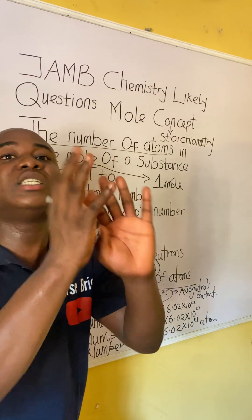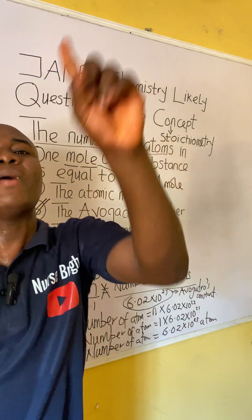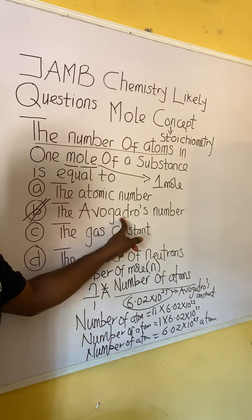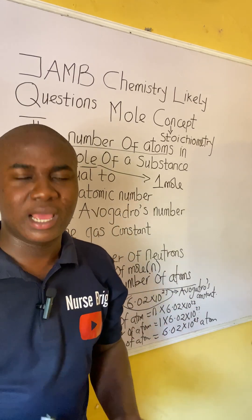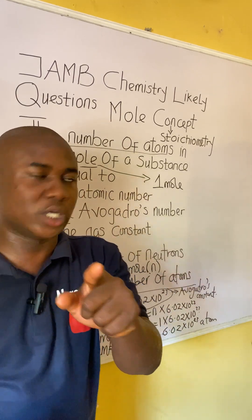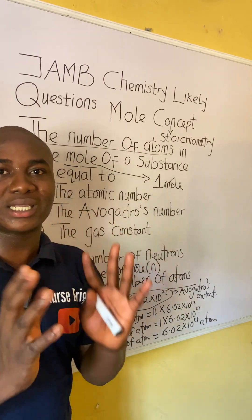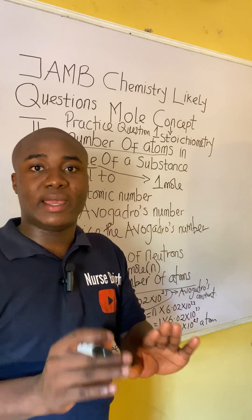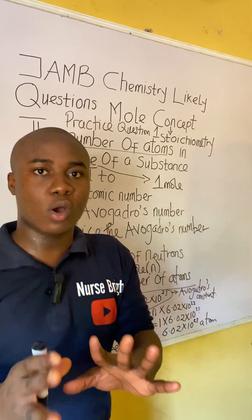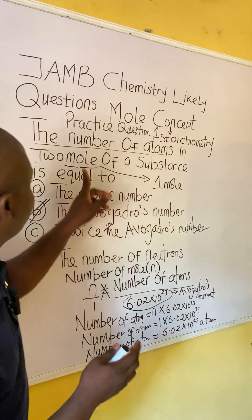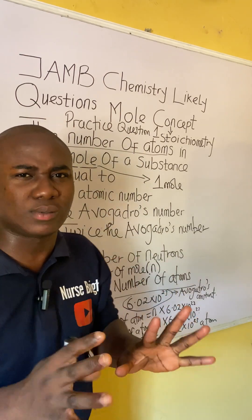That's why it's a popular saying that the number of atoms of a substance is the same as Avogadro's number. Now get ready for your own practice question — I'm going to change the question and the options so you understand. Here is your first practice question: the number of atoms in 2 moles of a substance is what? Solve and provide the answer in the comment section.